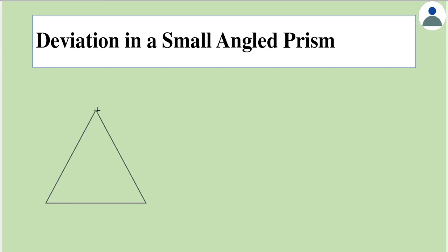Now let's consider the prism's cross section which would be a triangle, and let PQR be its vertices. The angle made between the two reflecting faces is called the angular prism, given by symbol capital A. A small angle prism basically means that a prism where A is small.